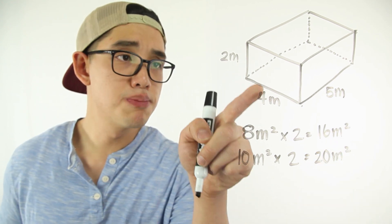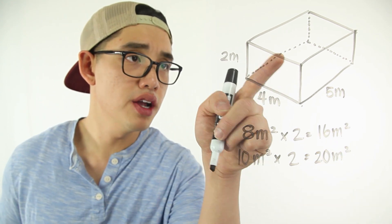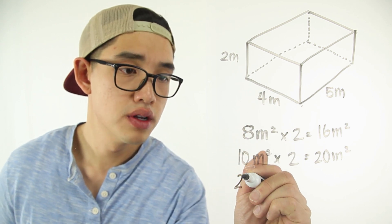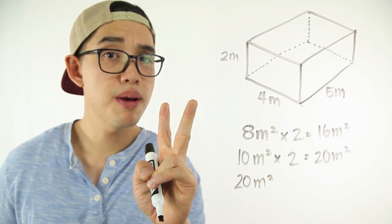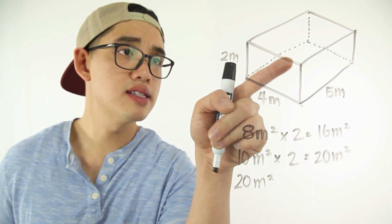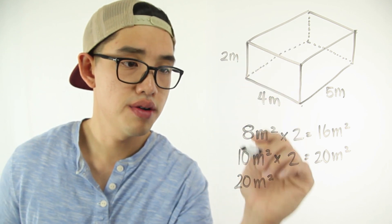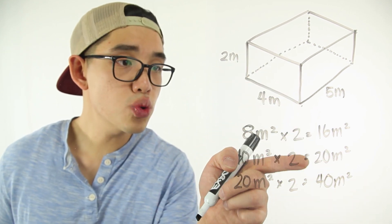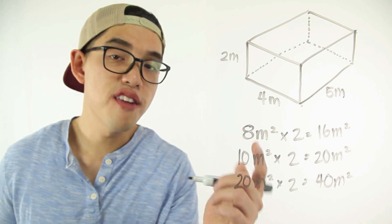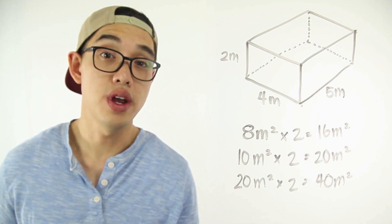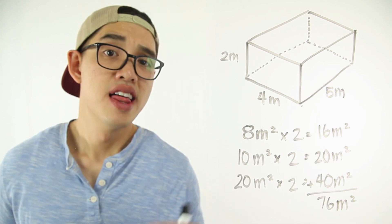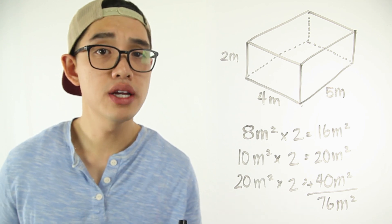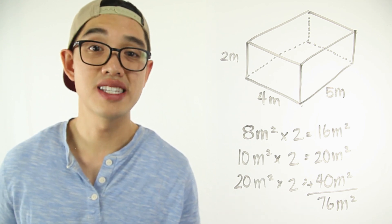And last but not least, I have this bottom part right here. That's four times five, which is going to give me 20 square meters. And I'm going to also multiply by two, because that's the same as the top ceiling right here. Now I can add up all of the square units and find the entire surface area. That's going to give me a total of 76 meters squared for my entire surface area.